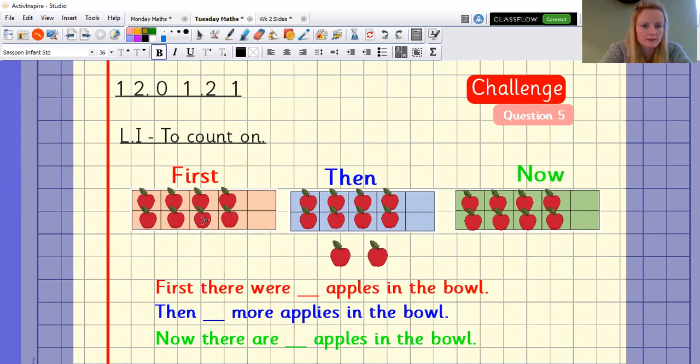Two, four, six, eight. There were eight apples in the bowl. One, two, two more apples go into the bowl.